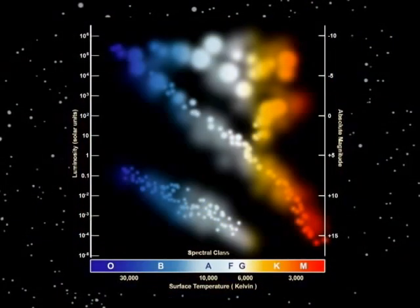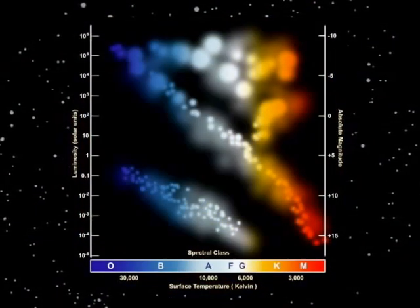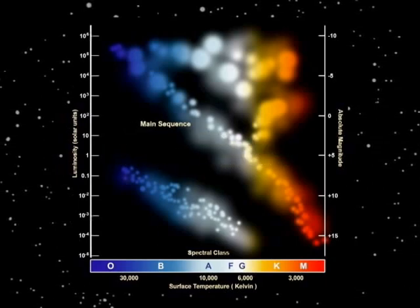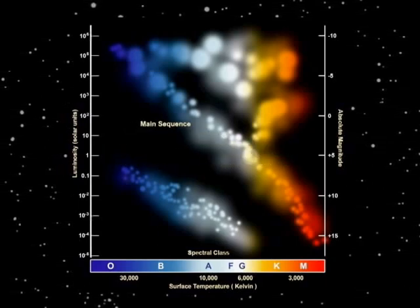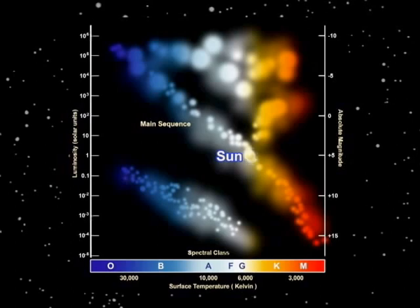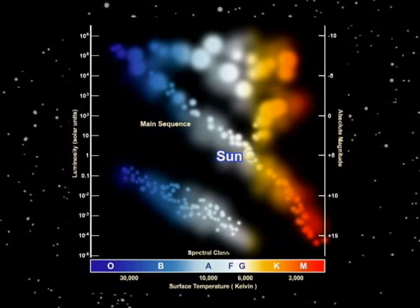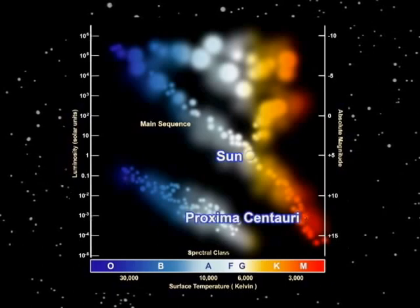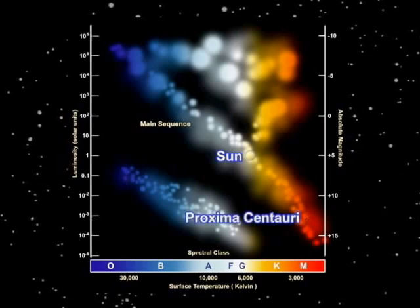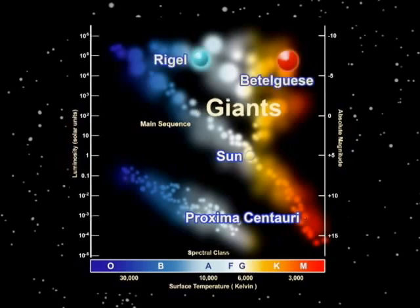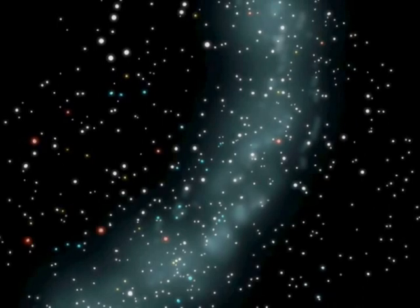Most of the stars, about 90%, belong to the main sequence. The hotter the stars, the brighter they are. The Sun, which belongs to the main sequence, is a yellow dwarf star. Just like the yellow dwarf star, a red dwarf star like Proxima Centauri is a young star. There are also giant and supergiant stars, which are old and large. Stars are really interesting.